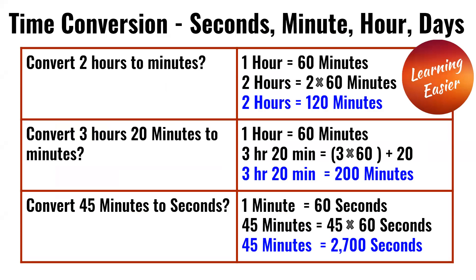Convert two hours to minutes. One hour is equal to 60 minutes. So two times 60 is 120. So two hours is equal to 120 minutes.